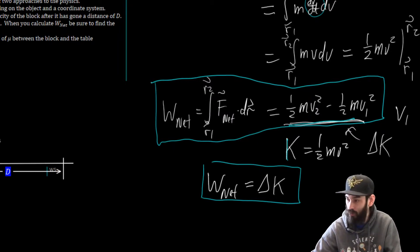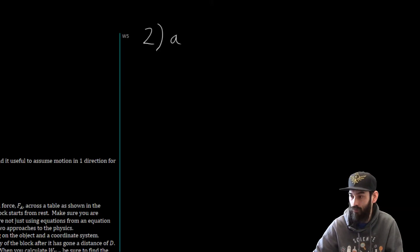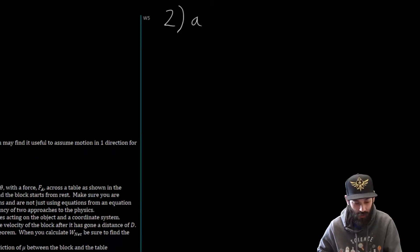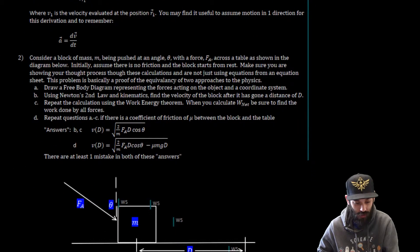So that's going to be it for this portion. Now what we want to do is move on to solving a problem. So now we're on to Part 2. We have this block of mass M that's being pushed at some angle of theta as shown in the picture here, with some constant applied force F_A. It's going to be moving across the table. Assume initially there's no friction and the block starts from rest.